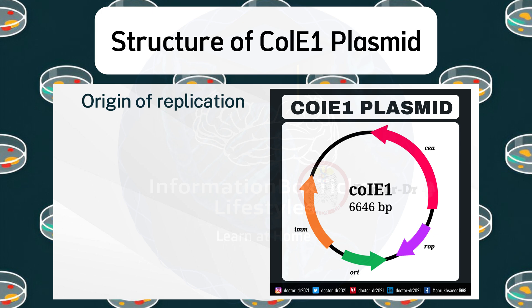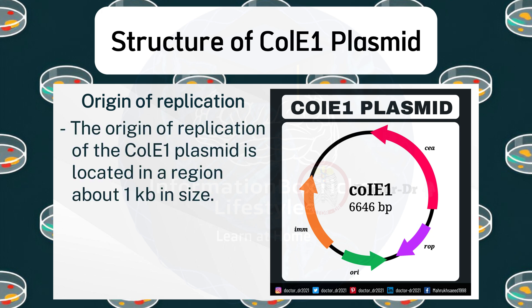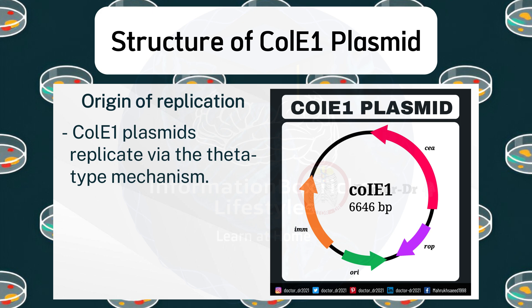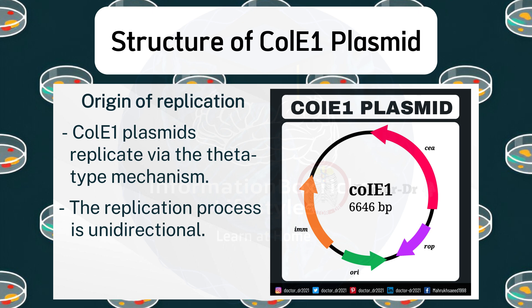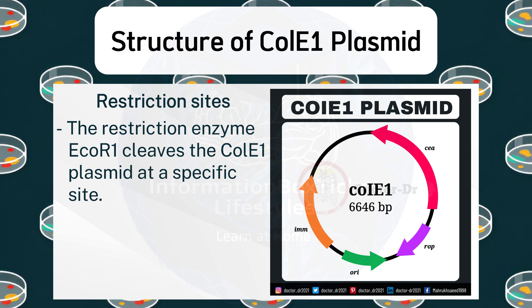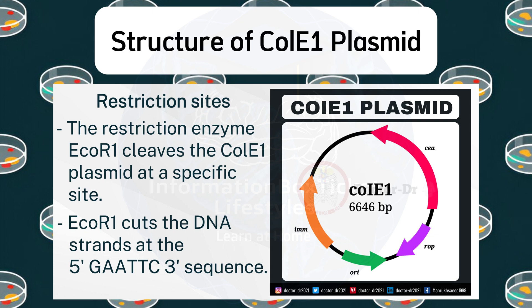Origin of Replication: The origin of replication of the ColE1 Plasmid is located in a region about 1 kb in size. It is situated 555 base pairs downstream from the RNA-2 start point. ColE1 Plasmids replicate via the theta-type mechanism. The replication process is unidirectional. The restriction enzyme EcoRI cleaves the ColE1 Plasmid at a specific site, cutting the DNA strands at the 5'-GAATTC-3' sequence.